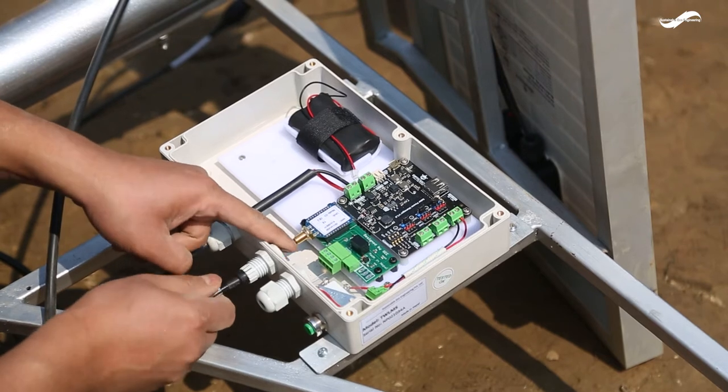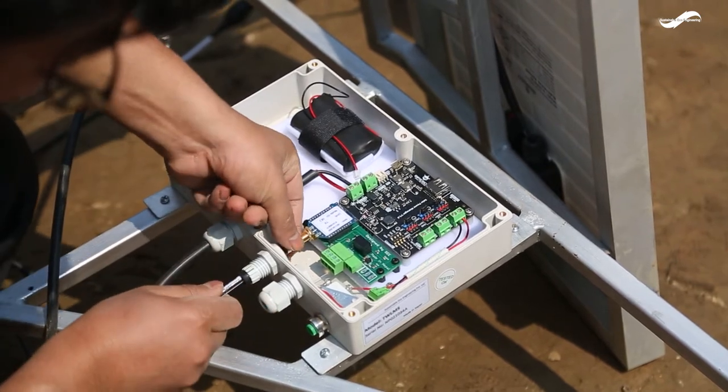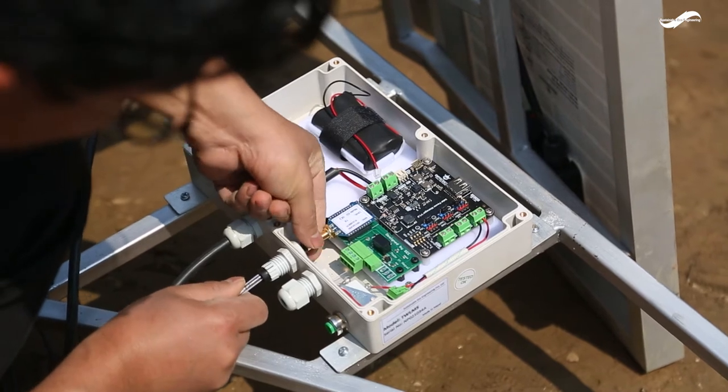Insert the radio antenna cable through the gland at the middle and connect it to the antenna port on the PCB.